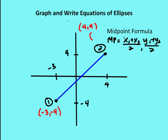So in this case, I have two coordinates: negative three, negative four, and four, four. It doesn't really matter which one is one or which one is two, but I've identified the coordinate negative three, negative four as one, and the coordinate four, four as two, and then I take the average of the values.